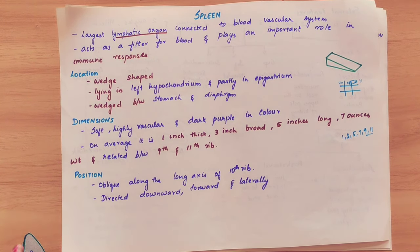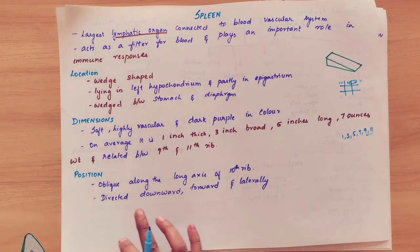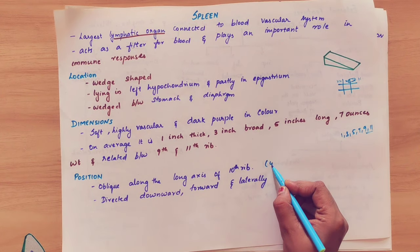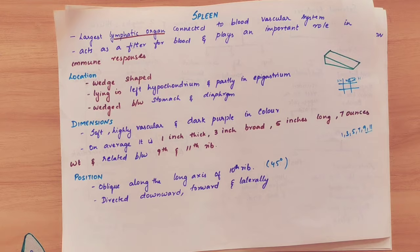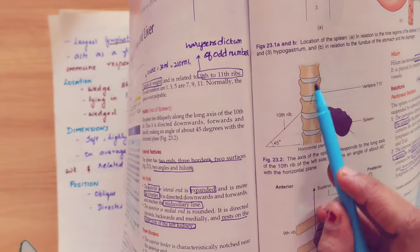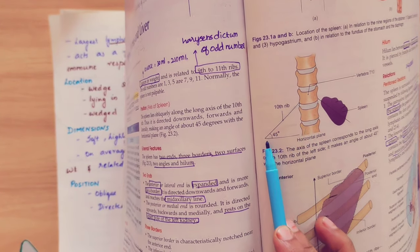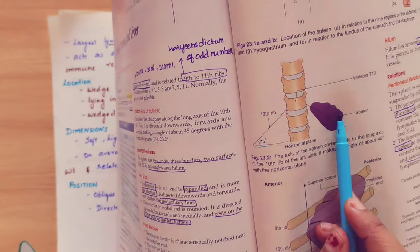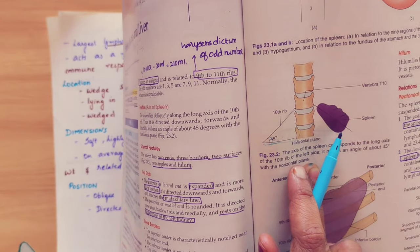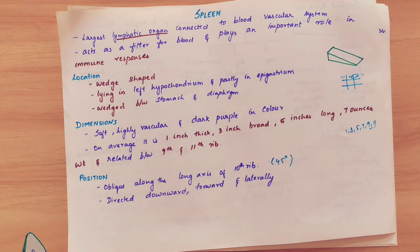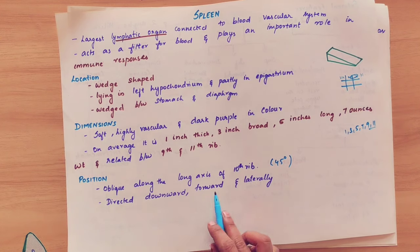Coming to the position. The 10th rib is directed downward, forward, and lateral. It makes a 45-degree angle between the 10th rib and the imaginary horizontal line, as you can see in this diagram. Here is the vertebral column and this is the 10th rib. The spleen is obliquely placed along the long axis of the 10th rib making a 45-degree angle, directed downward, forward, and laterally.